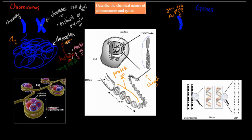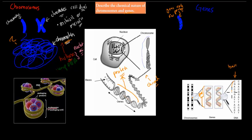Looking at this chromosome zoomed in, we can see just a tiny section. This section corresponds to a stretch of DNA being wrapped around the histones. If we look at the bases — which we'll cover soon — these are the bases that make up that DNA sequence. And if we translate those bases, that will lead to our protein.